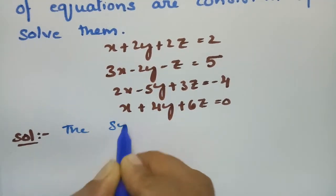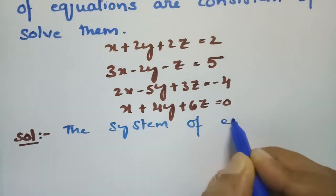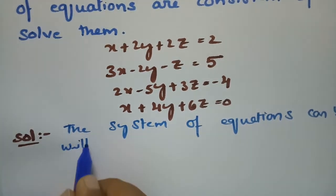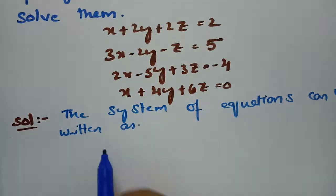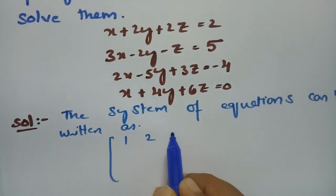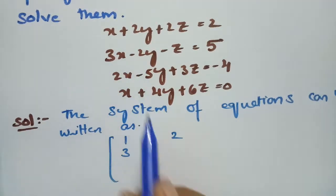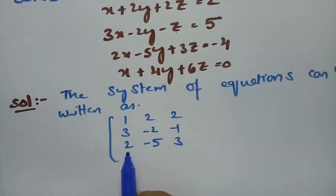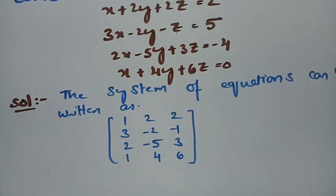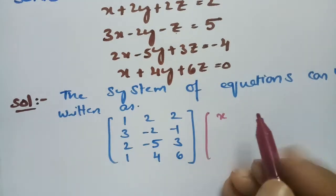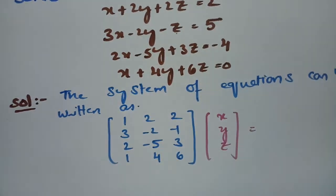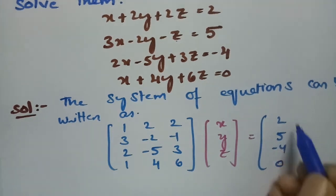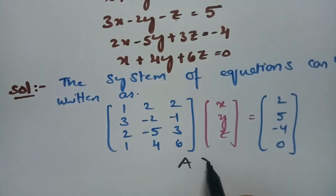The system of equations can be written in matrix form. The coefficient of x in the first equation is 1, then 2, 2, and 3. In the second equation, the coefficient of x is 3, y is minus 2, and z is minus 1, and the values are 2, minus 5, 3, then 1, 4, and 6. The unknowns are x, y, z, and the column matrix B is 2, 5, minus 4, and 0. This is of the form Ax equals B.